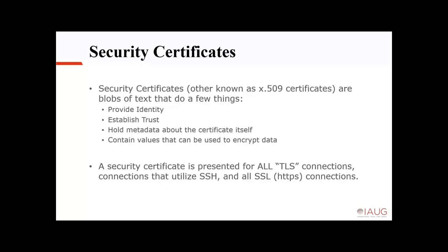Let's talk about security certificates. Security certificates, also known as X.509 certificates, are essentially blobs of text. They're not a specific file type — they're literally a blob of text. In that blob of text, they do a few things: they establish identity, asserting who you are; they establish trust, who trusts me and who do I trust; they hold metadata like expiration date, when it was issued, who issued it, address information, where the certificate is supposed to live, and what the certificate is supposed to be used for. A security certificate is presented for all TLS connections — SSH, HTTPS, voice over IP encrypted links.